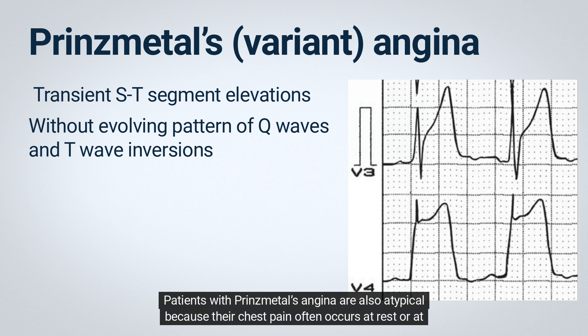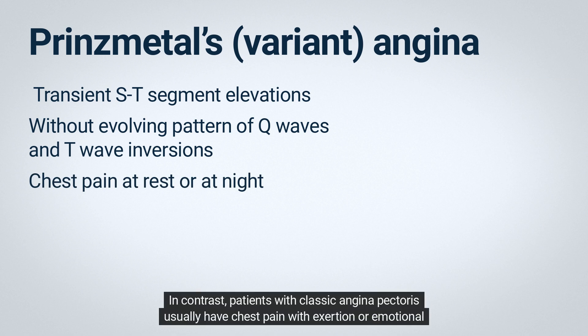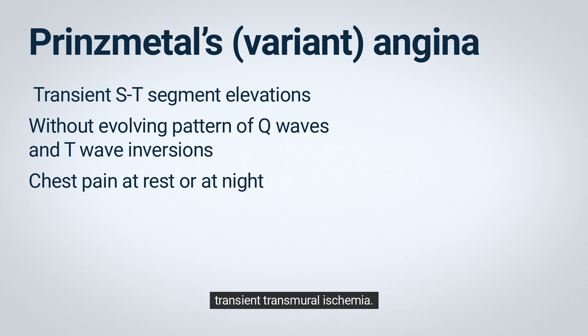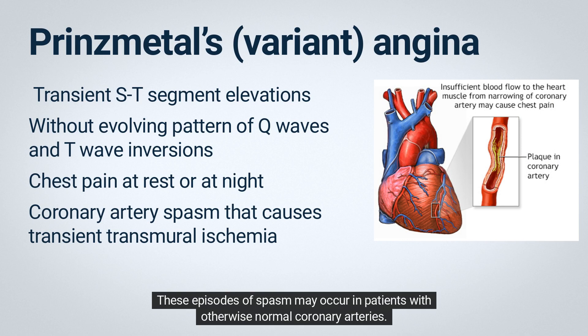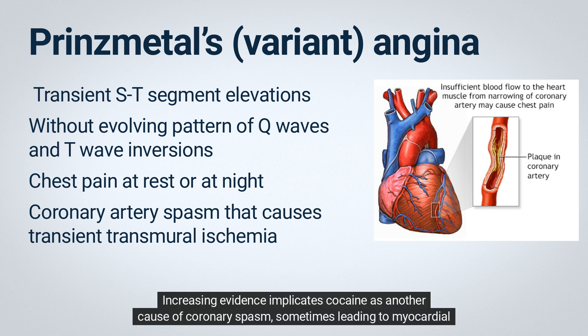Patients with Prinzmetal's angina are also atypical because their chest pain often occurs at rest or at night. In contrast, patients with classic angina pectoris usually have chest pain with exertion or emotional stress. Prinzmetal's angina pattern is significant because it is a marker of coronary artery spasm that causes transient transmural ischemia. These episodes of spasm may occur in patients with otherwise normal coronary arteries.